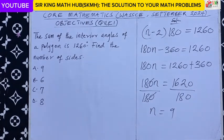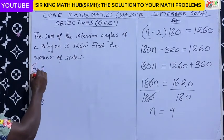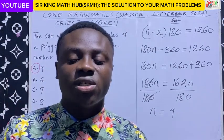So this polygon has 9 sides. The right answer is option A. Thanks for watching.